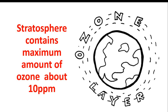The stratosphere contains a maximum amount of ozone of about 10 ppm. PPM is a unit of quantity used for smaller amounts — it stands for parts per million. As compared to other atmospheric gases, the amount of ozone is very small, so we use ppm instead of larger units. The amount of ozone in the stratosphere is 10 ppm.